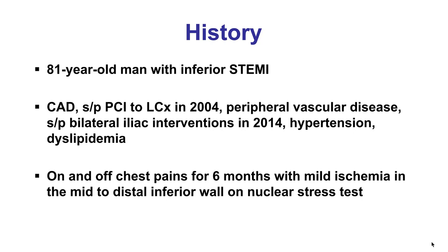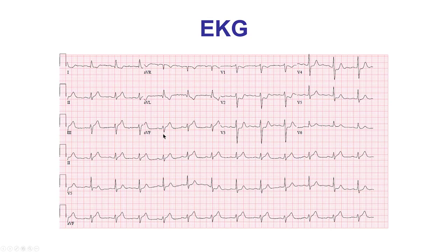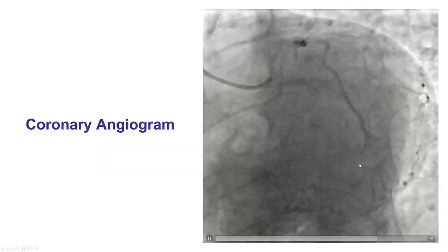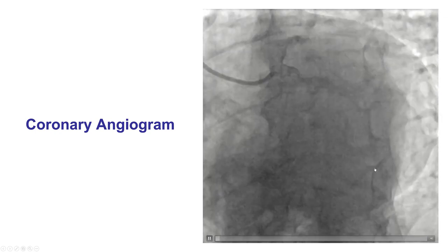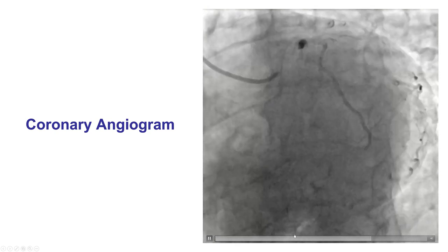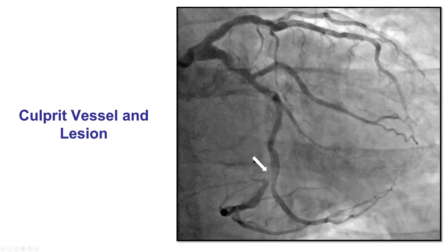The patient was an elderly gentleman who presented with inferior ST elevation myocardial infarction. EKG showed elevation in the inferior leads as well as ST segment depression in leads V2 through V5. Coronary angiography showed a severe lesion in the mid-to-distal circumflex at the bifurcation of a large obtuse marginal branch, and there was also a significant lesion in the proximal circumflex. The culprit lesion appeared to be the mid-circumflex lesion that was hazy and thrombotic, but the proximal circumflex was also decided to require treatment.